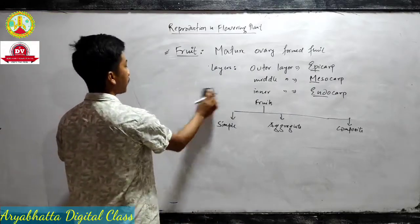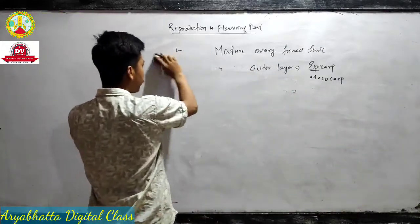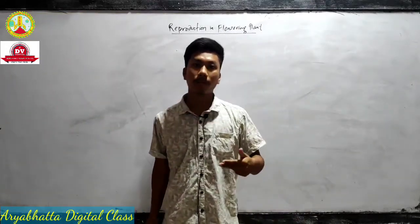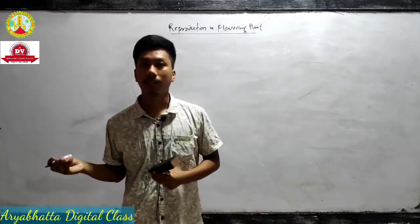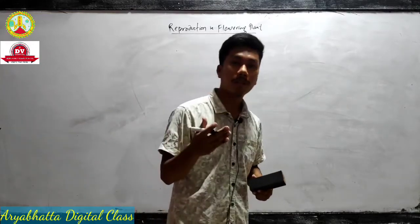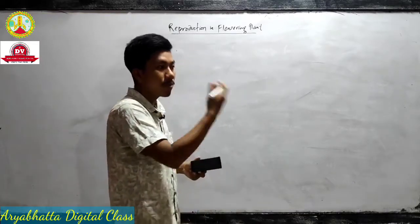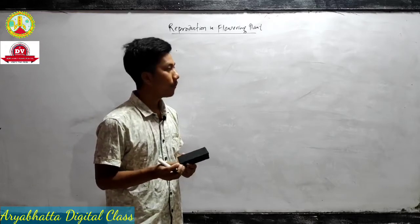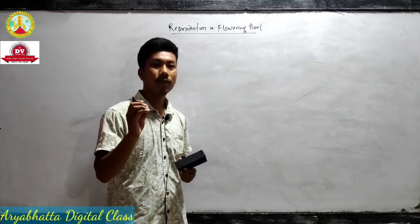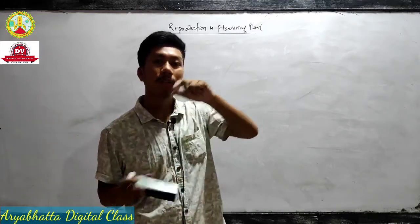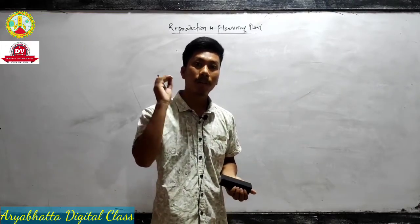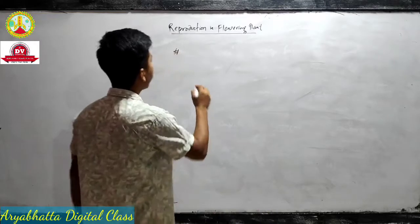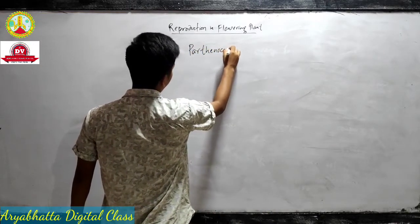After fertilization, the zygote forms, then the embryo, then seeds, then fruits — this takes place after fertilization only. But there are some fruits which are formed without fertilization, without the fusion of male and female gametes. Those fruits are known as parthenocarpic fruits and the process is known as parthenogenesis.